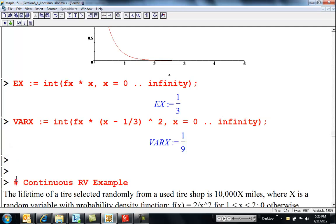That's just going to be integrate f of x times x minus mu squared from x equals zero to infinity. So there's the variance. Standard deviation is the square root,